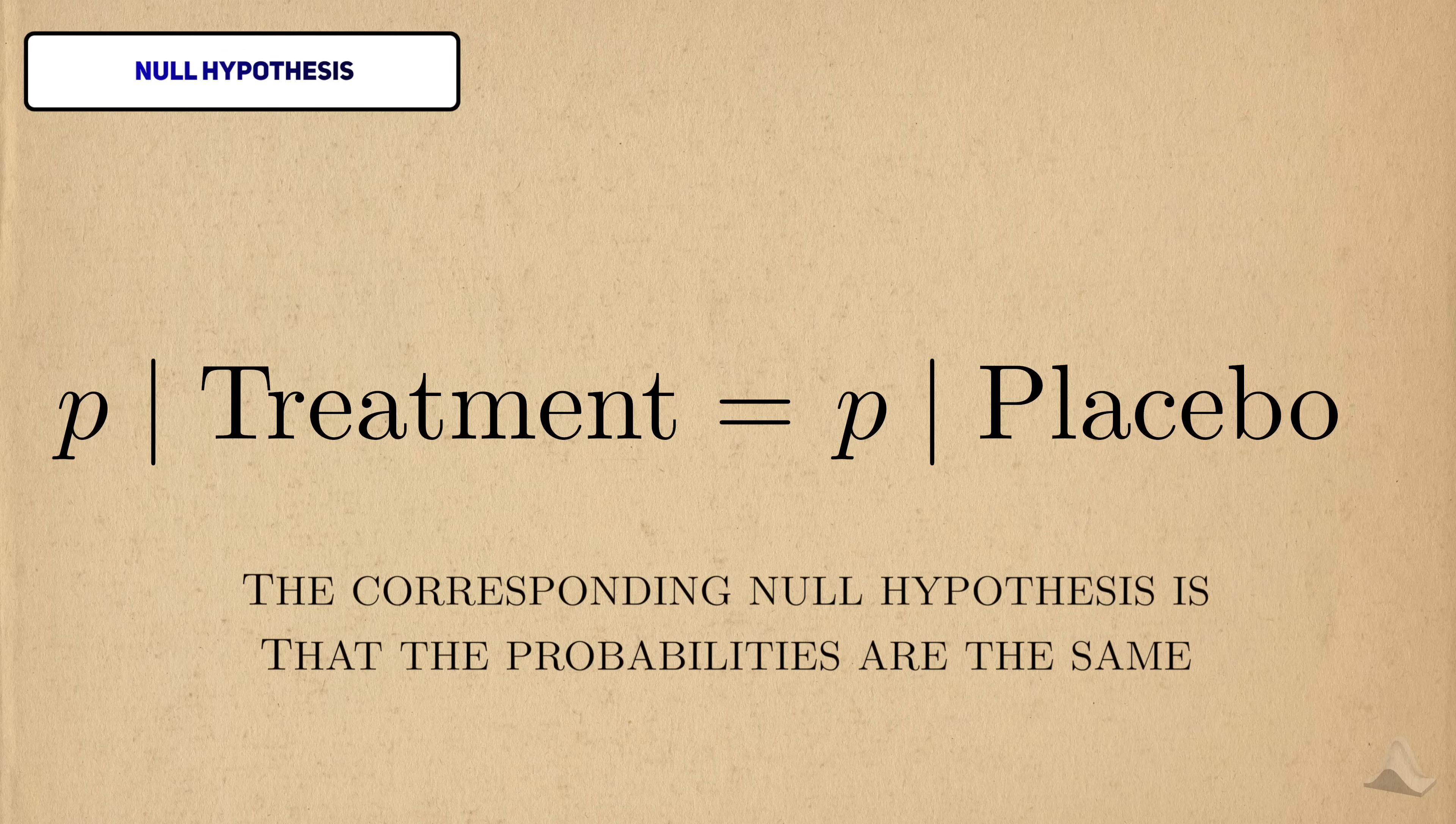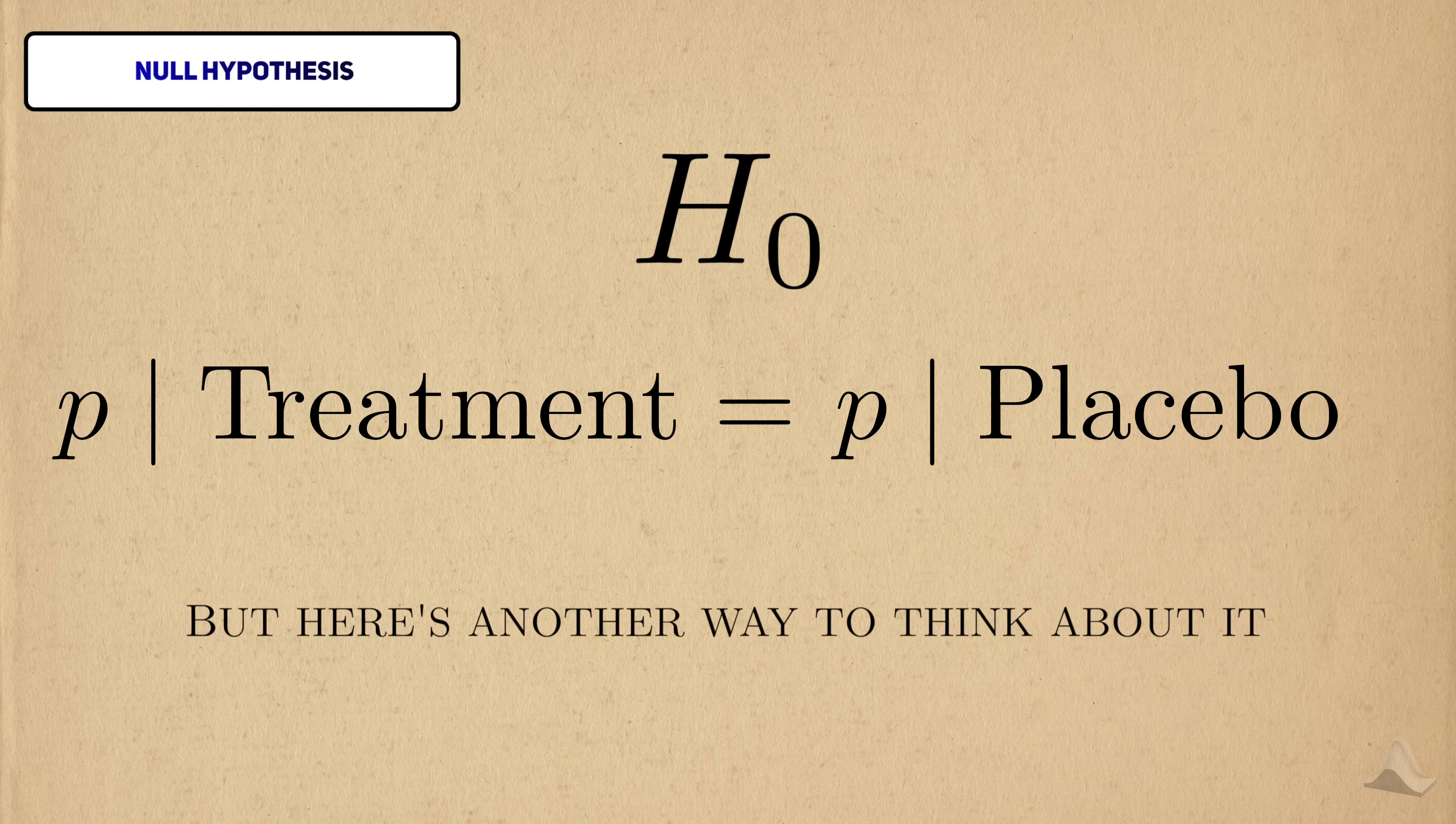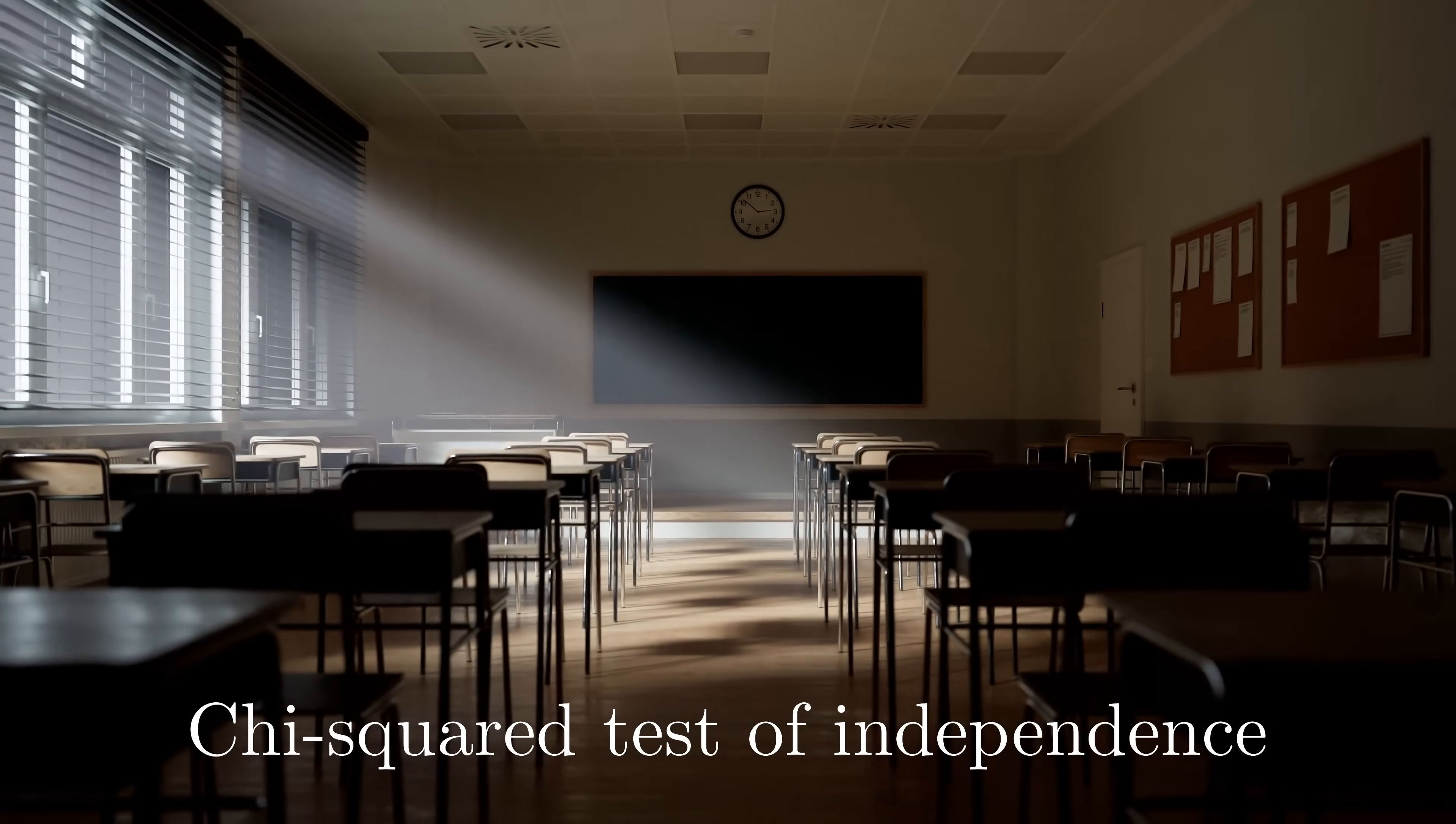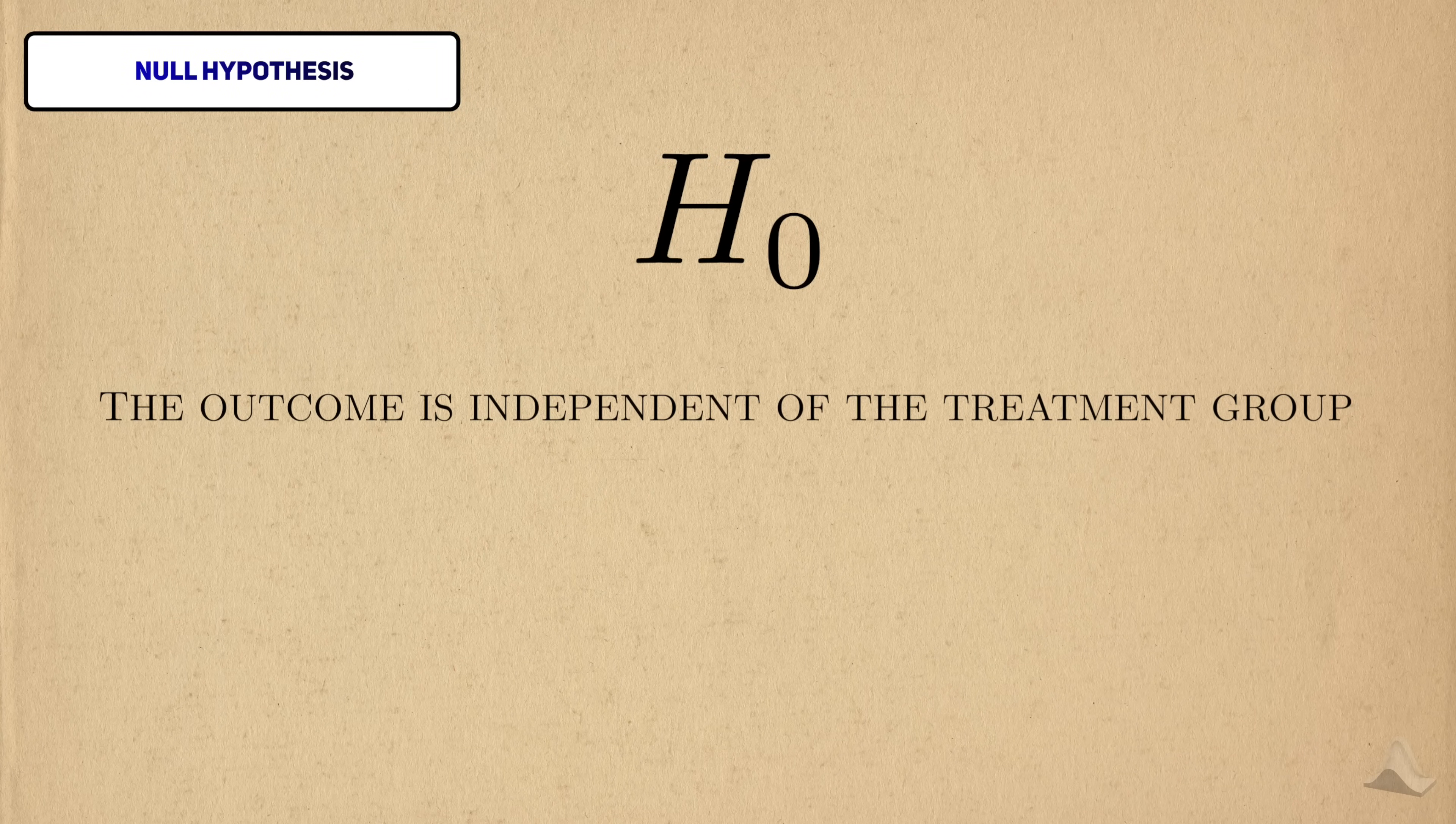By flipping this statement on its head, we can get a null hypothesis for this test. But here's another way to think about it. If you've worked with the chi-square test before, you may have heard it be referred to as the chi-square test of independence. From the perspective of independence, the null hypothesis is that the outcome is independent of treatment group.